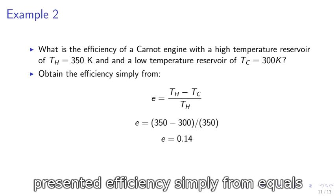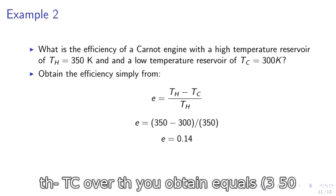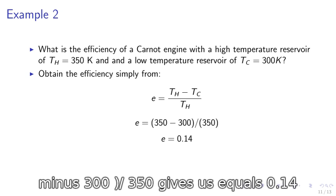We calculate the efficiency simply from e equals TH minus TC over TH. This gives us TH minus TH divided by TH gives us e equals 0.14.